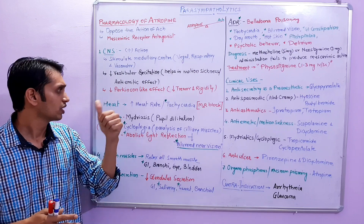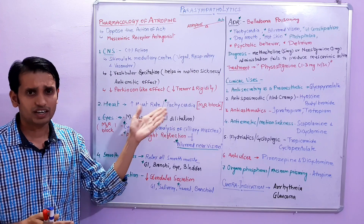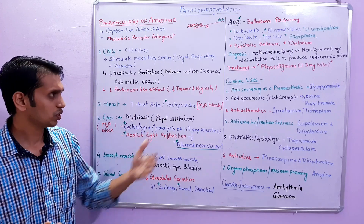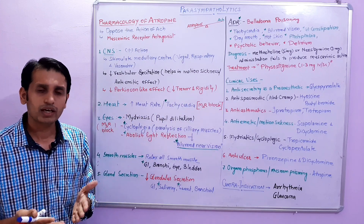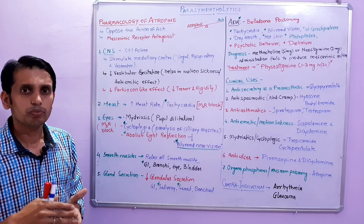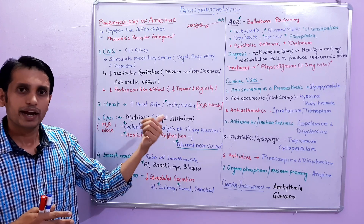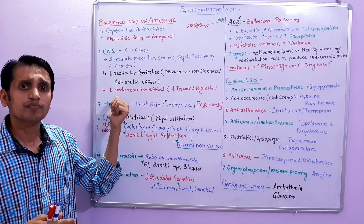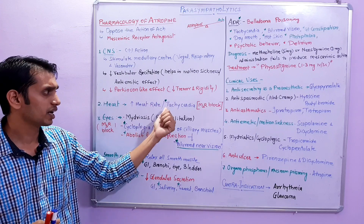Now come to the heart. Atropine causes an increase in heart rate — tachycardia. Normally, the M2 receptors in the heart mediate vagal tone and produce bradycardia. But atropine blocks the M2 receptors and opposes the action of acetylcholine, therefore it enhances the heart rate and produces a tachycardia effect.